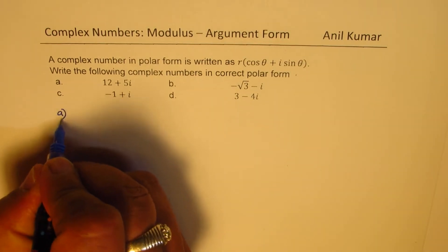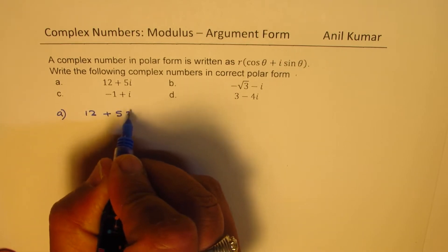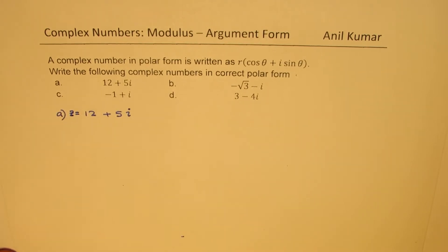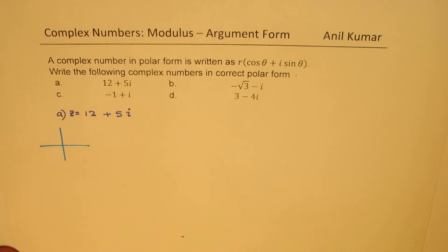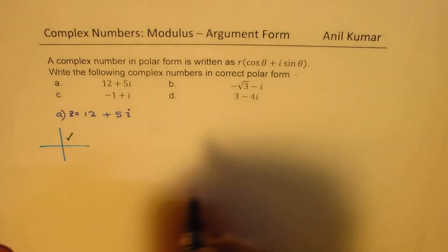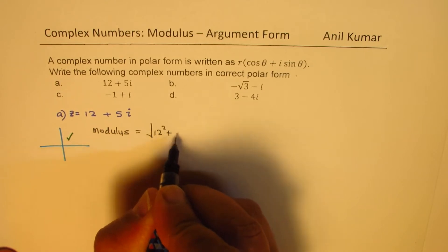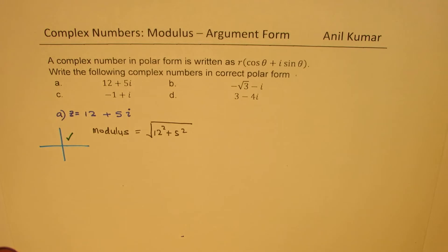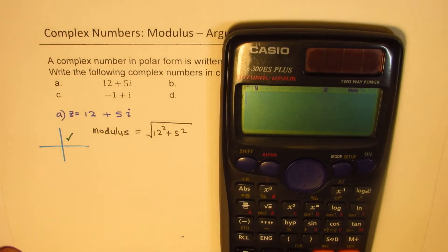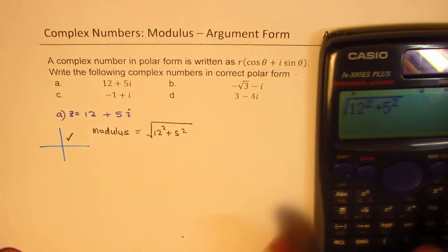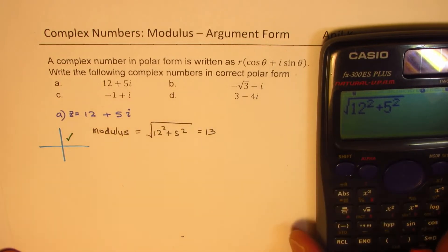Let us begin with part (a): z = 12 + 5i. This complex number is in quadrant 1 since both parts are positive. So the argument will be the angle alpha itself. The modulus is the square root of 12² + 5², which gives us 13. So r = 13.